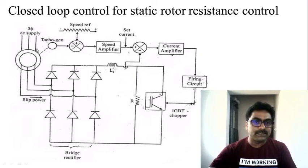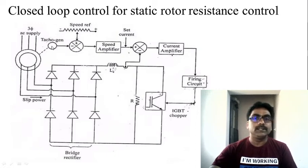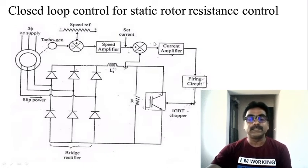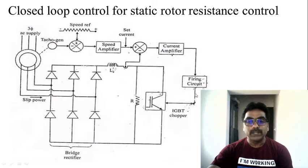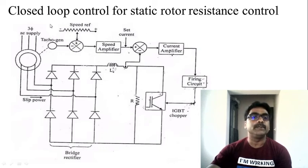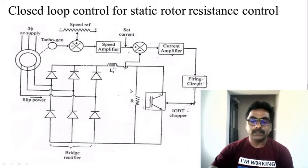The control signal is given to the current controller and current limiter, and further taken to provide the duty cycle or firing pulses to the converter. In this static rotor resistance control diagram: the current error produced by the comparator is given to the current amplifier, which provides a signal to the firing circuit, which generates a pulse train to the IGBT switch to control the effective resistance. Thus, the effective rotor resistance is controlled via closed-loop control.